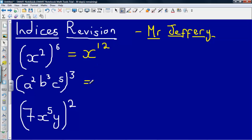The next one again, treat each part individually, so a squared raised to the power of 3 gives us a to the power of 6, b cubed raised to the power of 3 would give us b to the power of 9, and then lastly c to the power of 5 raised to the power of 3 would give us c to the power of 15.